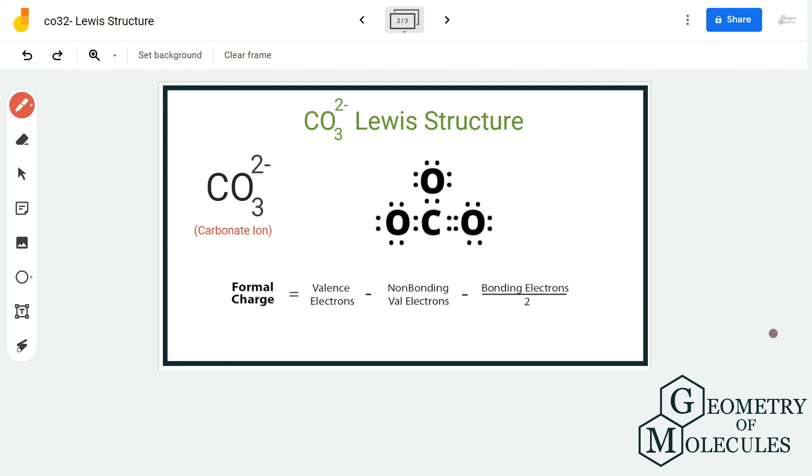What we need to do is put brackets and also write the charges of this molecule. Because whenever you are drawing the Lewis structure for ions, make sure to add brackets. That is how we write the Lewis structure for ions. So we are going to add brackets and write charges. This is the Lewis structure for CO3^2-.